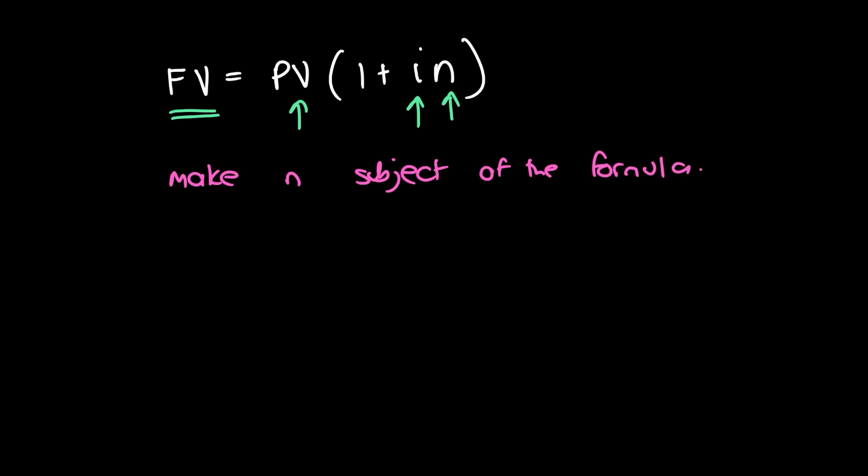So how do we go about doing that? We start off with our original equation. The aim is to get n by itself. So to get n by itself, we need to get rid of everything else. You'll notice that n is in brackets here. So what we can do is take everything over here and move it across, and we move it across by dividing through by it. So we're going to have future value divided by present value is equal to 1 plus i times by n.